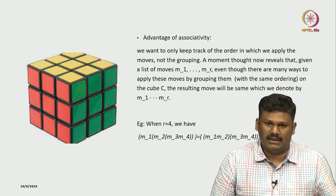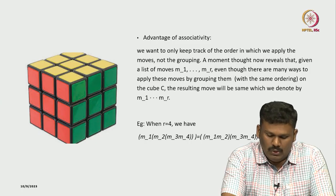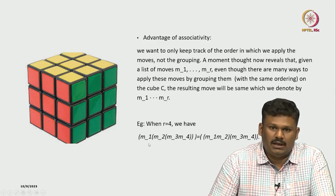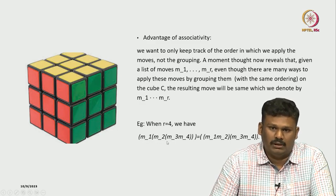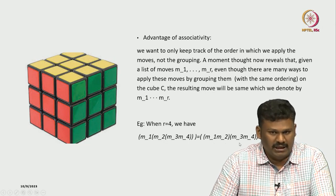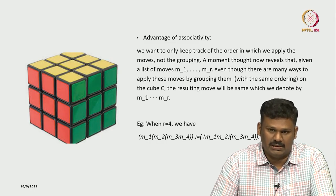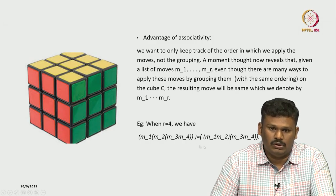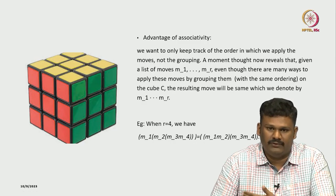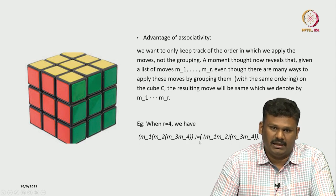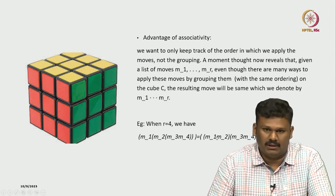Let us look at one example - take R equal to 4. So I have given you two examples. You can see that you apply M1, then M2, then M3, then M4. The brackets tell you how you are applying the moves on the Rubik's cube. But you can also do it as: first apply M1M2 and then apply M3M4. What we are interested in is what happens at the end - how the configuration changes. You can see that by applying these two different groupings, the configuration will still be the same. Because we are only interested in the end result, we say these two moves are the same.